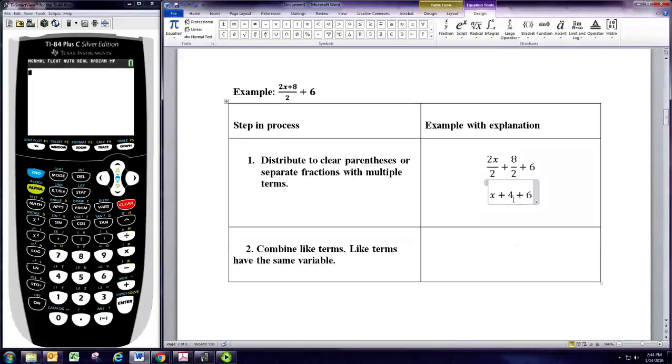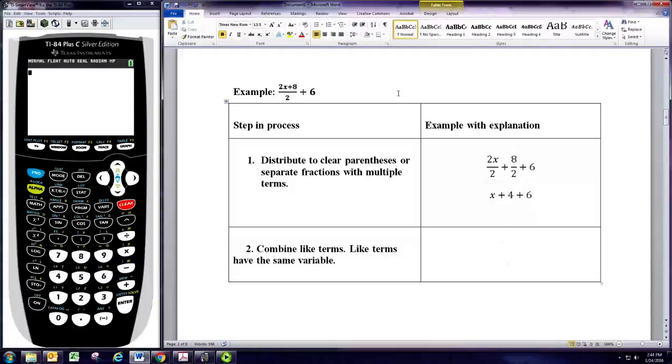Okay, now combine like terms. In this case, the two constants, 4 and 6, are like terms. So, we get our final answer is x plus 10.